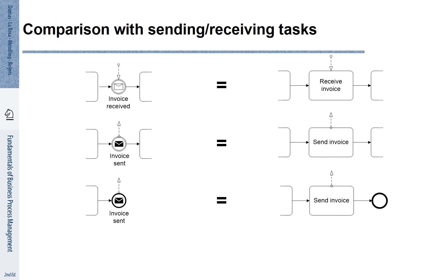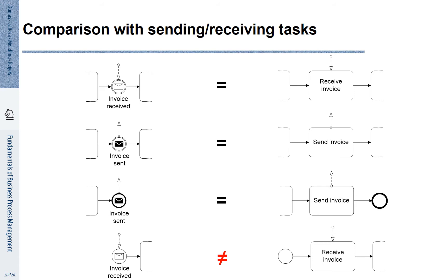The only thing we need to bear in mind is that start events cannot be readily represented as activities. The start event indicates the point in time when the process is triggered — here, it is the invoice being received. The alternative on the right-hand side with a receive invoice activity indicates that the process was started already earlier and then the invoice was received. This is not the same.